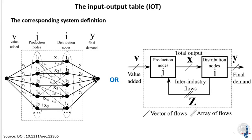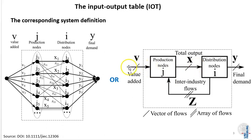In an input-output table you have four system variables. First, the final demand that the industry delivers to households and to government institutions. Second, the intermediate consumptions that industry purchases from other industries, and the total output vector that comprises the outputs of all industrial sectors. Finally, there is the value added — the capital and labor input to the different industries.